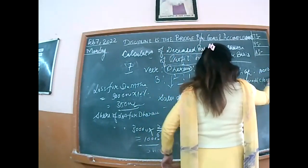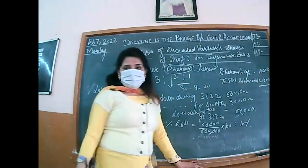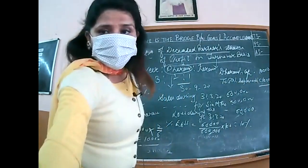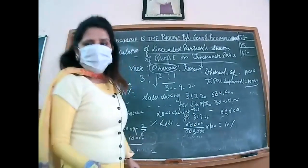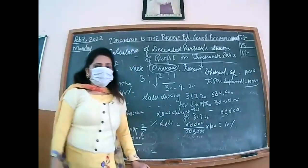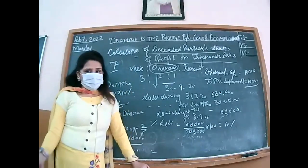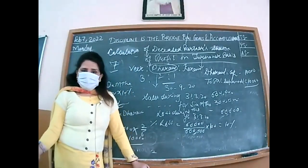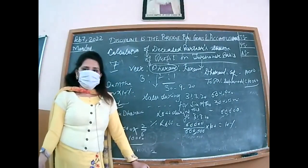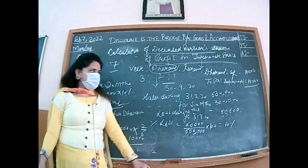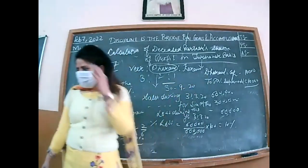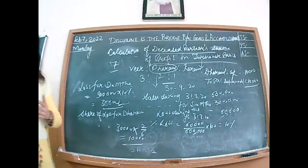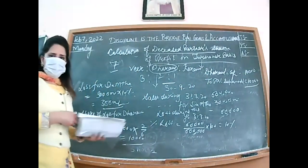We estimated it, so we cannot open a P&L Appropriation Account. This time we are opening a temporary P&L Suspense Account to transfer the estimated share of profit or loss to the deceased partner's executor. Entry: Dharam's Capital Account debit to P&L Suspense Account.